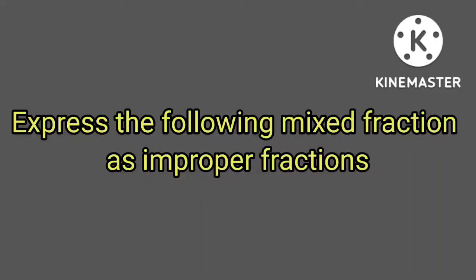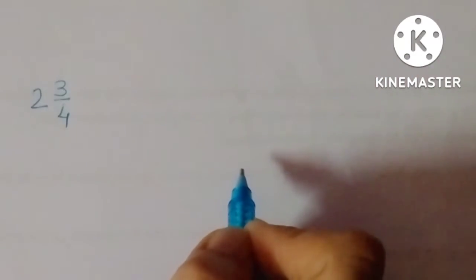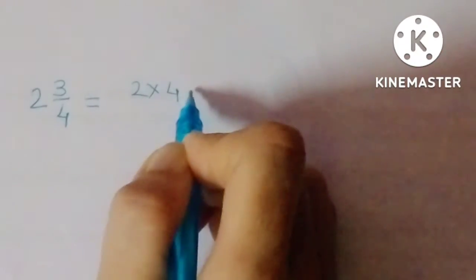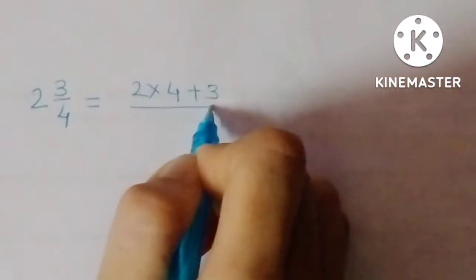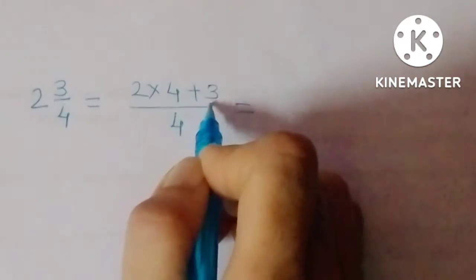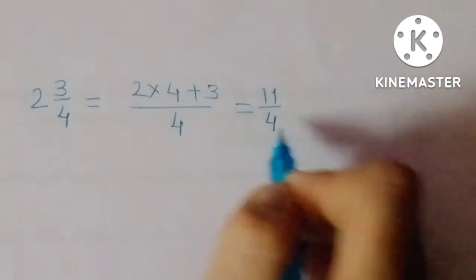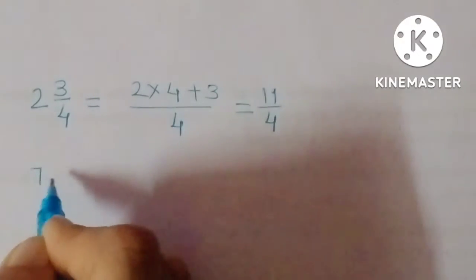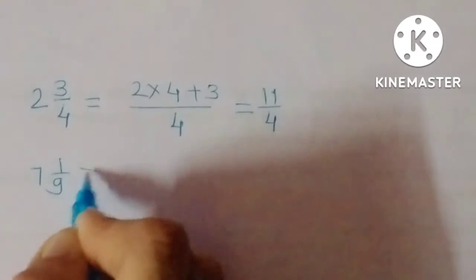Express the following mixed fractions as improper fractions. First problem: 2 and 3/4 equals 4 times 8 plus 3, giving 11/4. Next, 7 and 1/9.